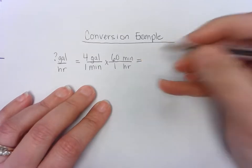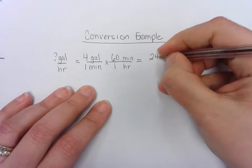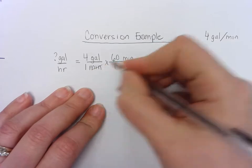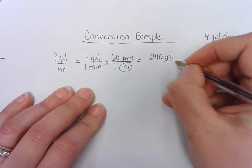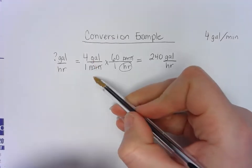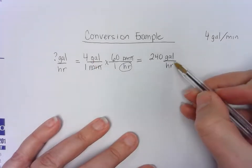This problem as it's written is finished. So four times 60 would get me 240 gallons. I know that I didn't change my gallons. My minutes canceled and I'm left with hours. So gallons per hour. If I had a pump that ran four gallons per minute, at the end of an hour it would have pumped 240 gallons per hour.